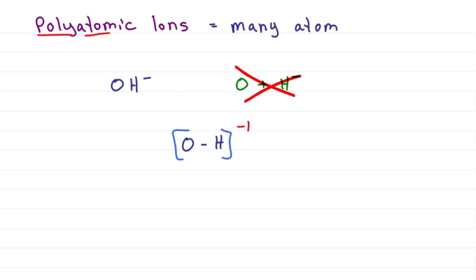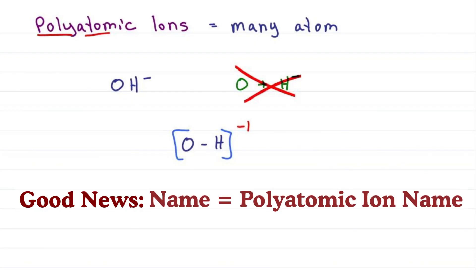If needed, formal charge in organic chemistry helps you find exactly where the charges come from. The good news, you just use the polyatomic ion as the name in your ionic compound.